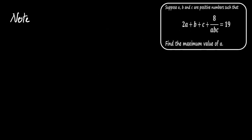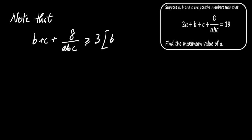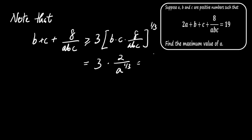Let's continue by noting the following. The sum B + C + 8/(ABC) is greater than or equal to 3 times the cube root of the product of B, C, and 8/(ABC). This simplifies to B + C + 8/(ABC) ≥ 3 times 2 divided by the cube root of A, which simplifies to 6 divided by the cube root of A.